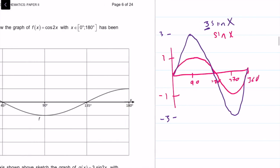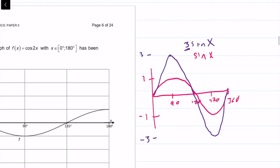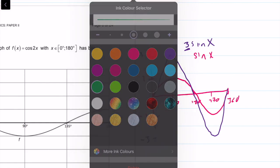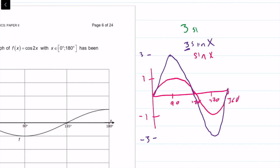Now we also plug in a 2 in front of the x, so we have another change. Let's try a color that's going to stand out. Let's say green. We have 3 sine 2x. So what does that do?